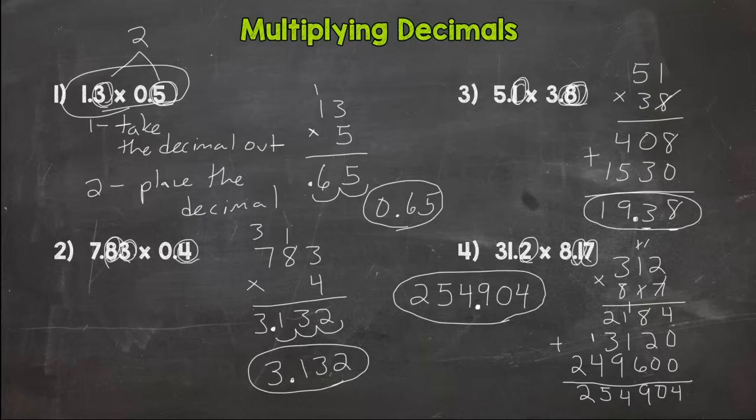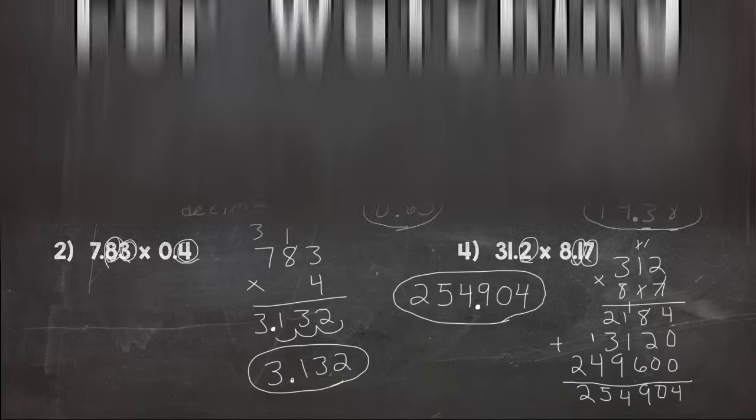Those are our four problems for multiplying decimals. Really, it's just the same exact thing as multiplying whole numbers. You just have to remember to place that decimal at the end. Remember, count how many numbers or digits are to the right of the decimal, and that's how many your answer will have. I will see you over at the Mastery Check to see if you have this down on your own. Thanks for watching.